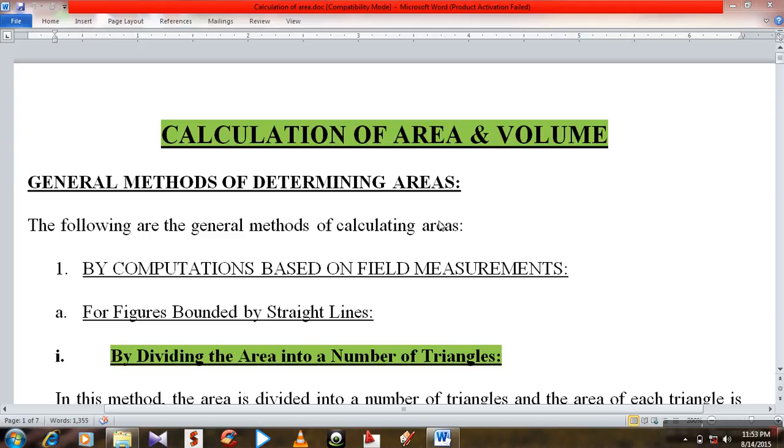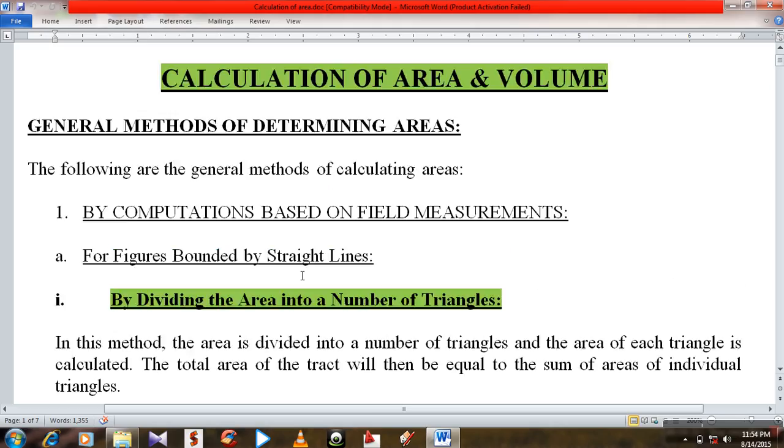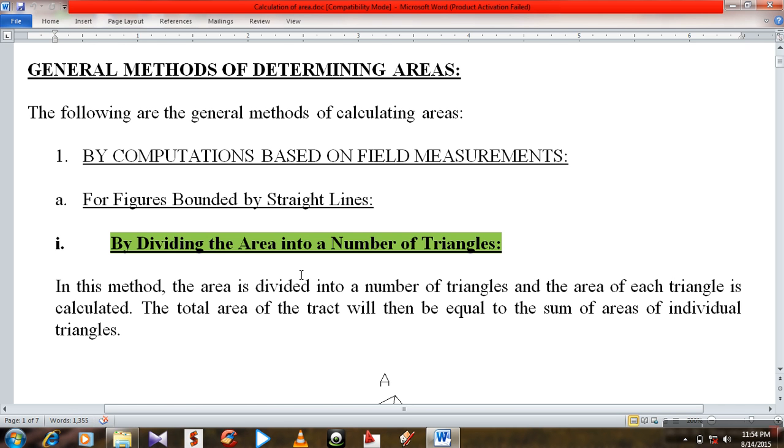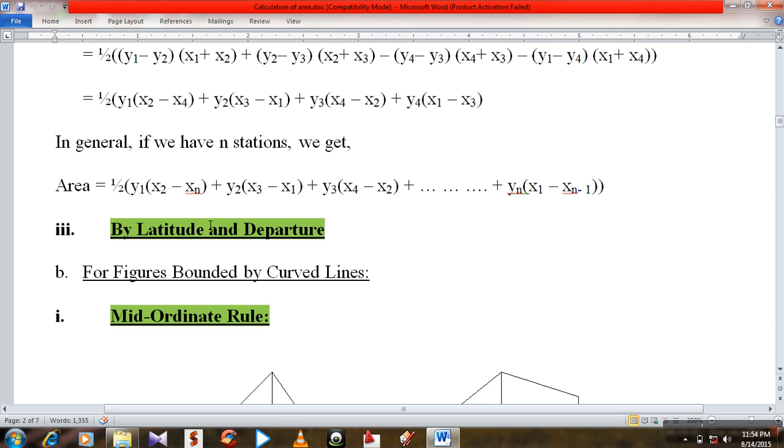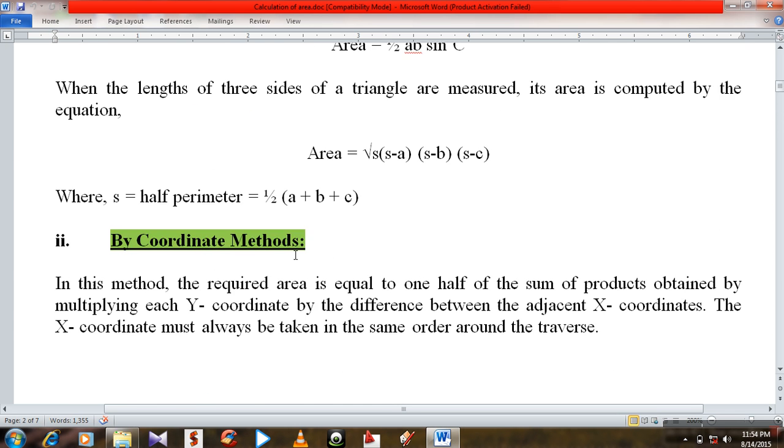There are several methods of determining areas. The following are the general methods of calculating areas by computation based on field measurements. First of all, for figures bounded by straight lines, these are divided into three methods: by dividing the area into number of triangles, by coordinate method, and third one is by latitude and departure method.